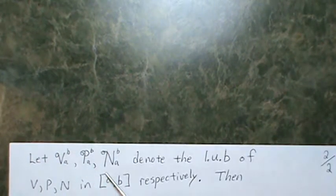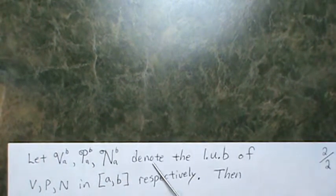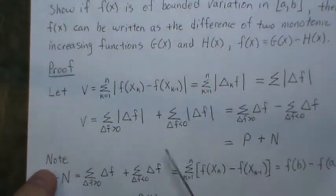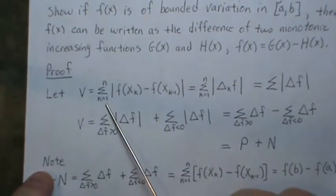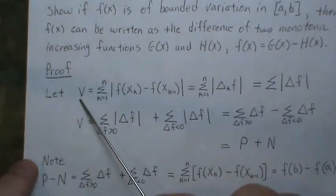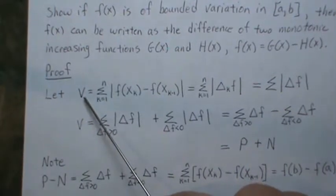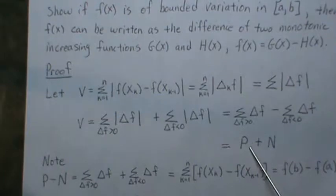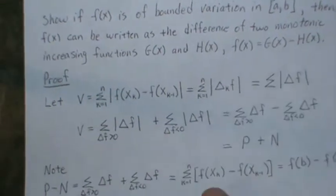Now let's introduce new notation: script-V, script-P, and script-N will denote the least upper bounds of v, p, and n over [a, b] respectively. So v, p, and n were defined for one partition; script-V, script-P, and script-N take the least upper bound over all possible partitions of [a, b].